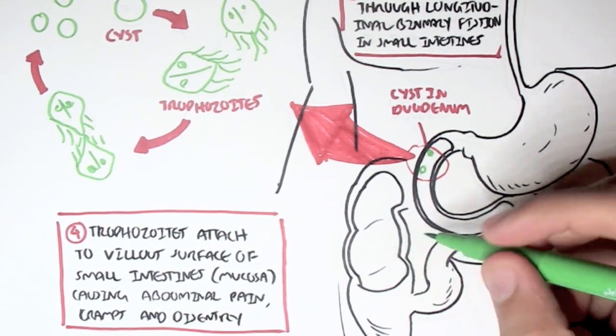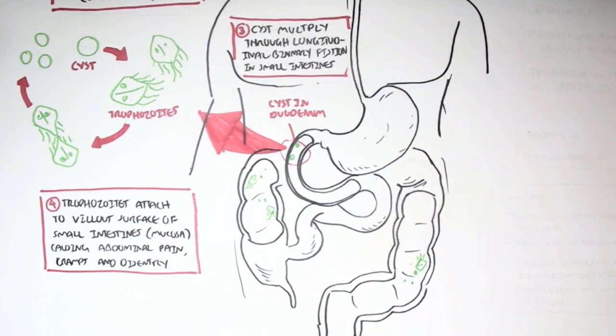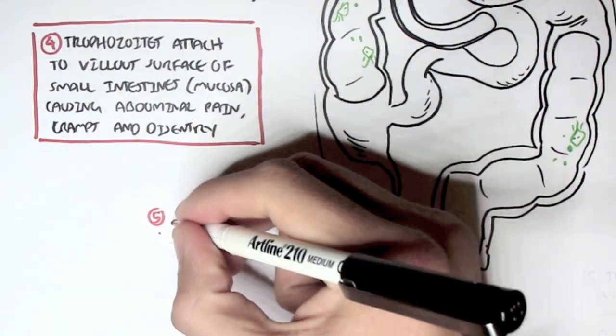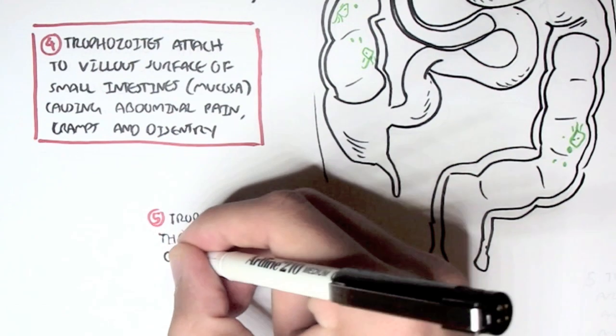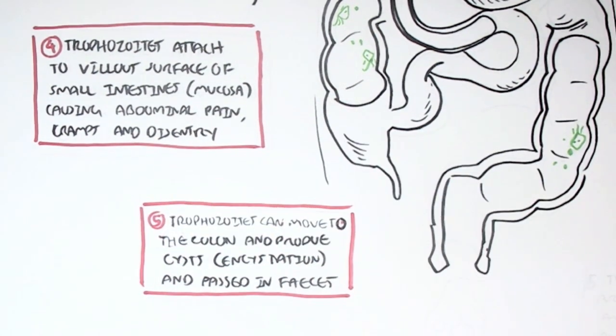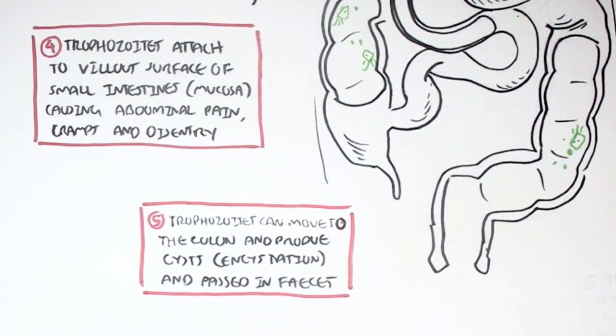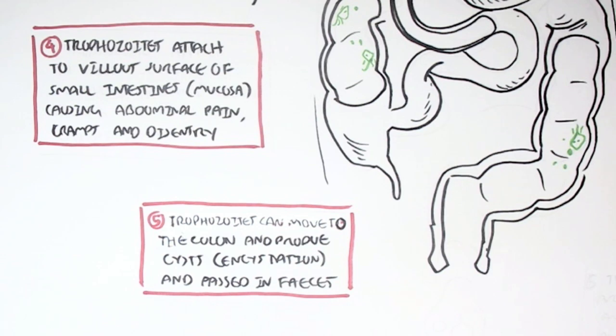The trophozoite, the Giardia trophozoite, can actually move to the colon and bind onto the mucosal surface there and produce cysts, a process known as encystation. And these cysts can then be passed in feces, so the trophozoites can move into the colon from the small intestine and then produce cysts here.